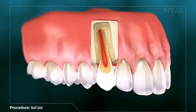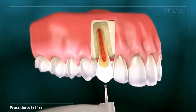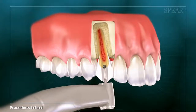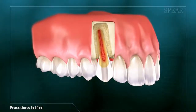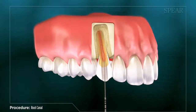For the first step of this procedure, your doctor numbs the area and then creates an opening in the tooth to access the root's interior. Your doctor will then remove the infected tissue and flush and clean the area.